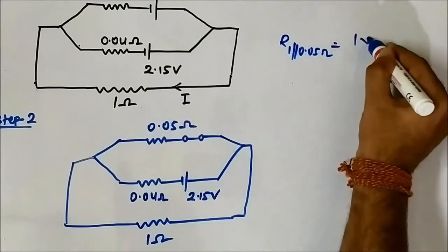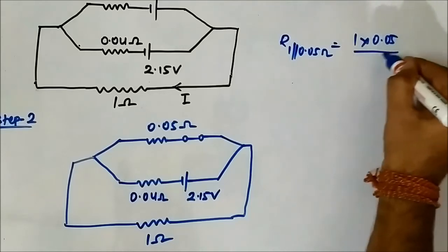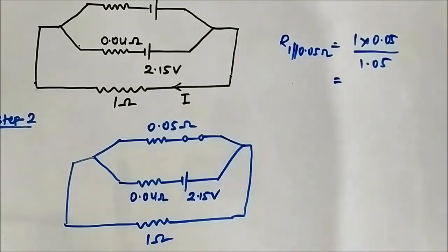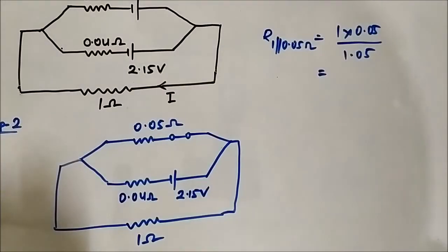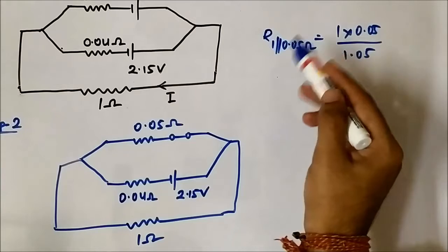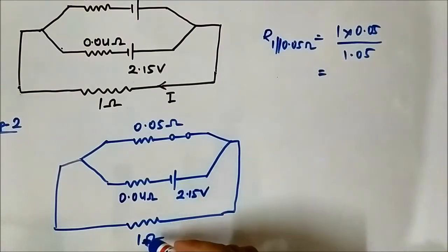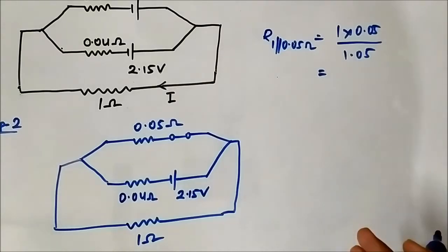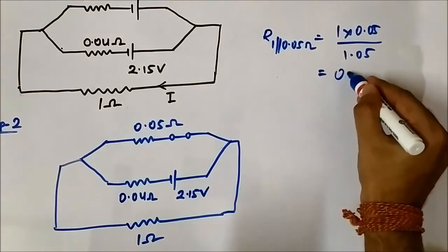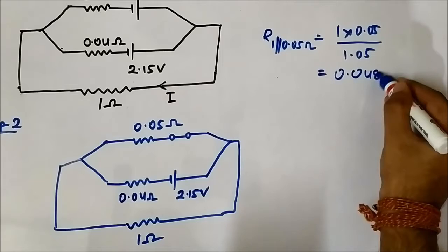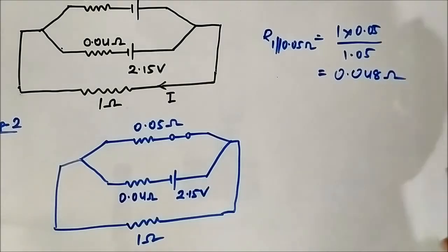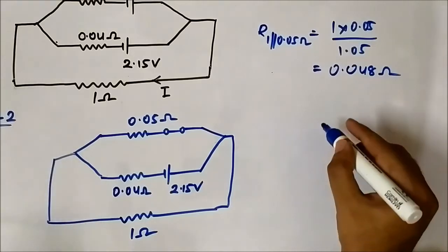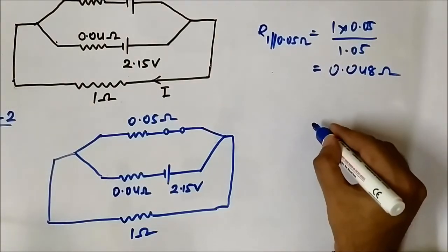The equivalent resistance of 1 ohm and 0.05 ohm in parallel is 1 × 0.05 / 1.05, which calculates to approximately 0.0480 ohm.